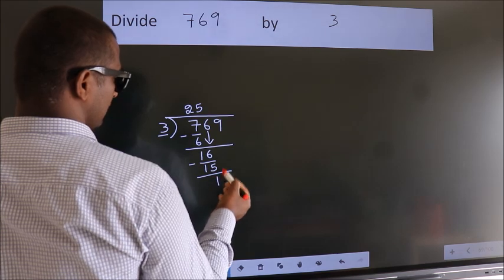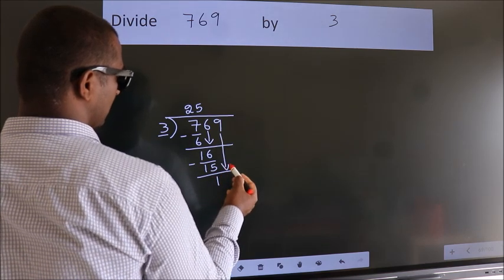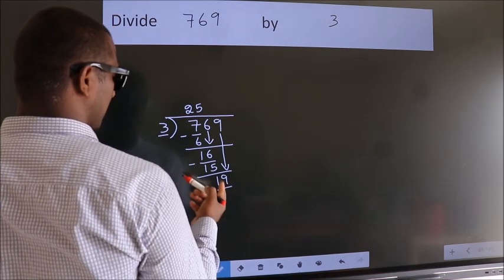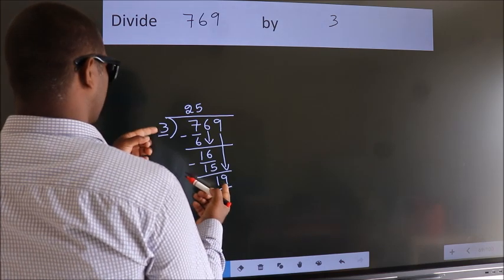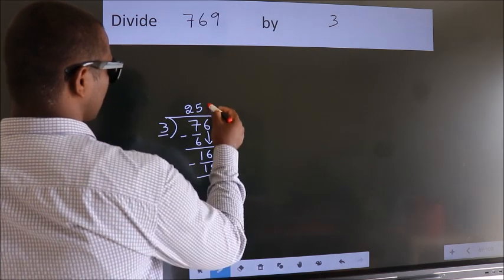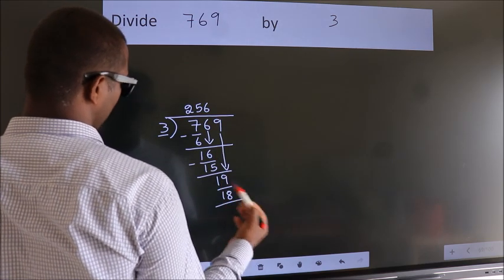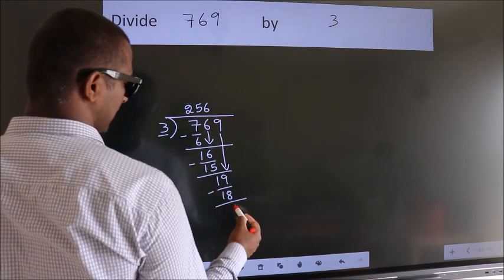After this, bring down the next number. So 9 down, so 19. A number close to 19 in the 3 table is 3 times 6 equals 18. Now we subtract. We get 1.